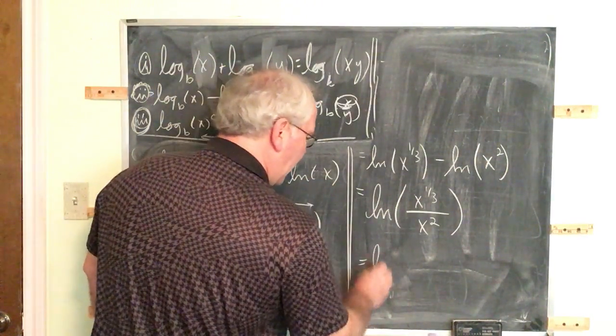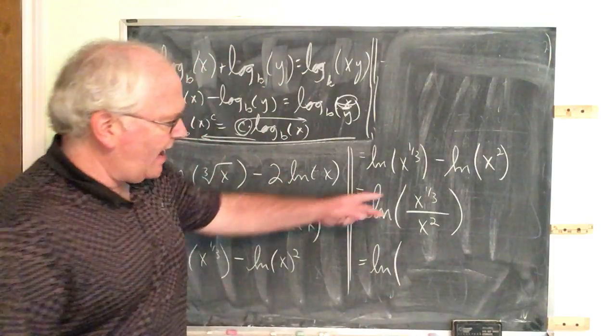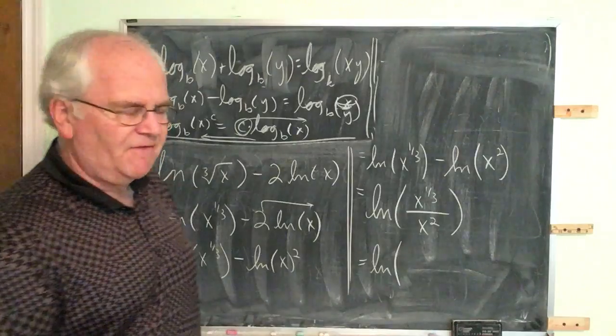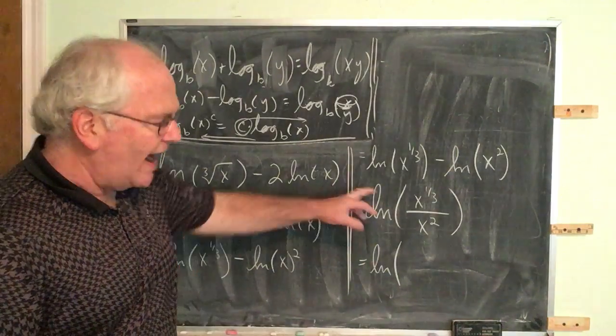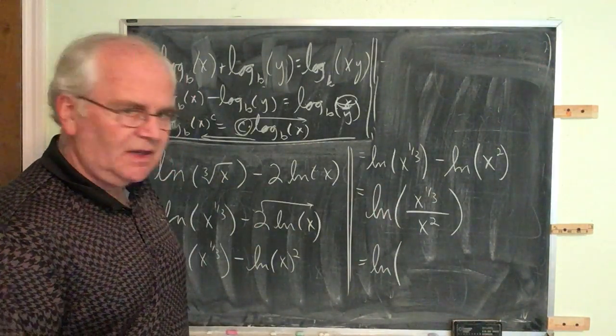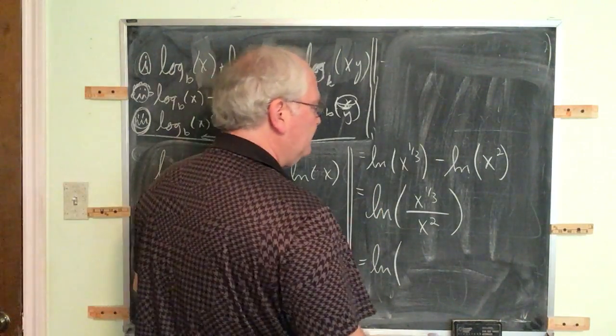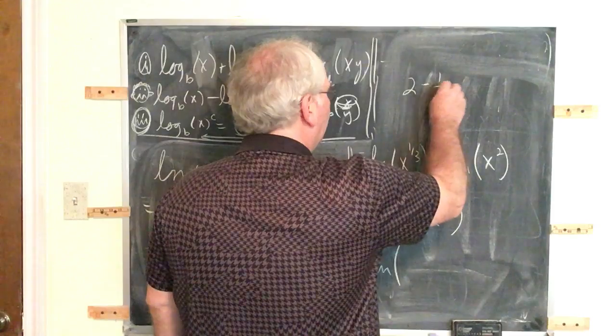And then now the last piece is you may actually combine these because they're both x raised to a power. Remember when you divide the exponents, when you divide the bases, you subtract the exponents. When you divide the bases, you subtract the exponents. So I need two minus one third.